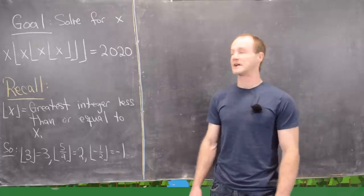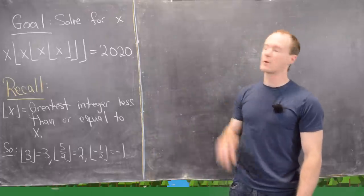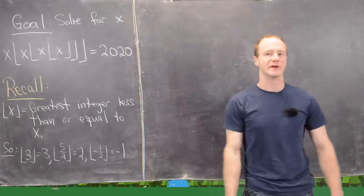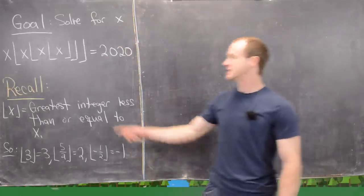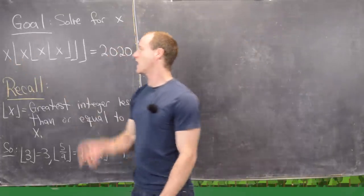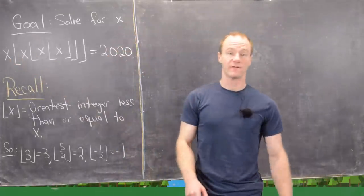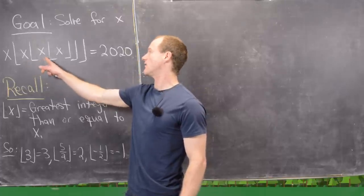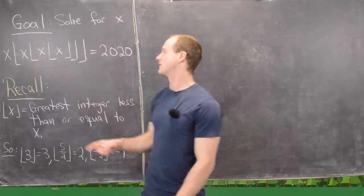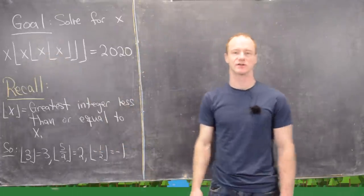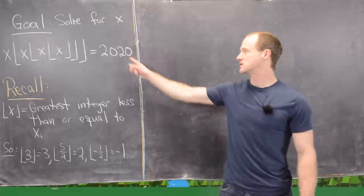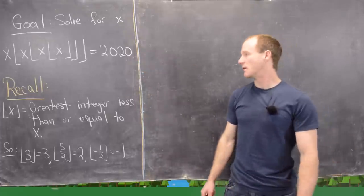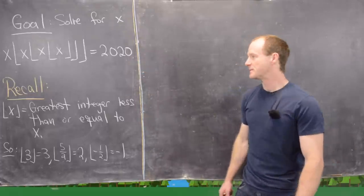I've got a really cool problem for you guys today. What we're going to do is solve for x in the following equation: x times the floor of x times the floor of x times the floor of x equals 2020. That's the current year — if you're watching this in the future, comment on what the future is like.